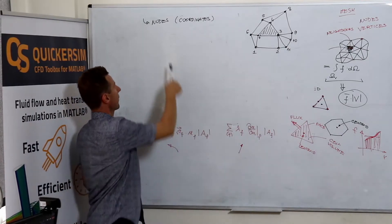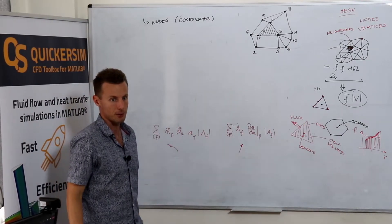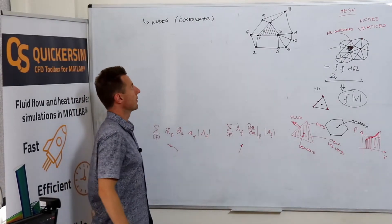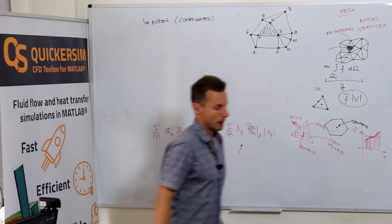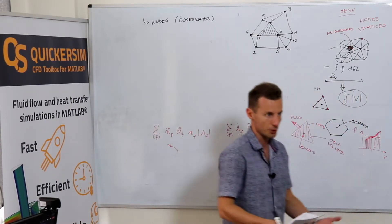Okay, and the first array that you're interested in in your implementation is simply the array that will store the x, y, maybe z coordinates of each of the nodes. Then what else do you need?